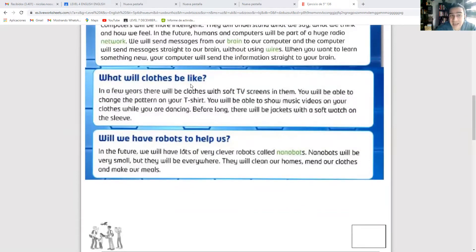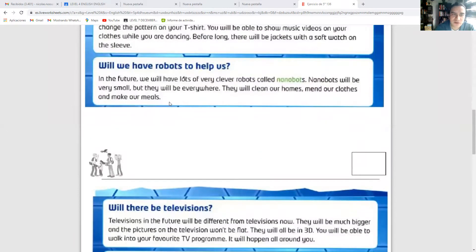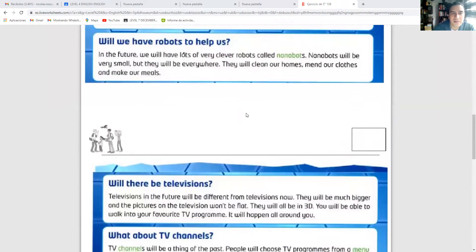What will clothes be like in a few years? They will be clothes with soft TV screens in them. You will be able to change the pattern on your t-shirt. You will be able to show music videos on your clothes while you are dancing. Before long, there will be jackets with a soft watch on the sleeve. Will we have robots to help us? In the future we will have lots of very clever robots called nanobots. Nanobots will be very small but they will be everywhere. They will clean our homes, mend our clothes, and make our meals.